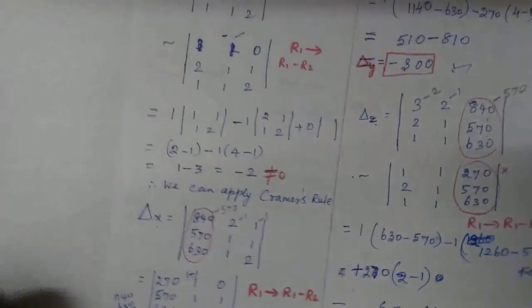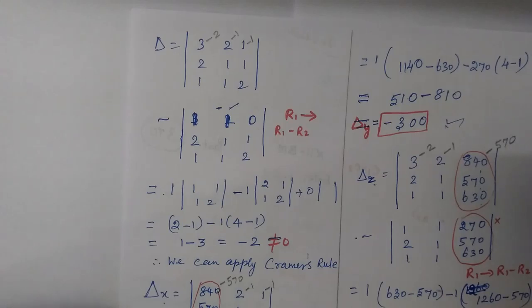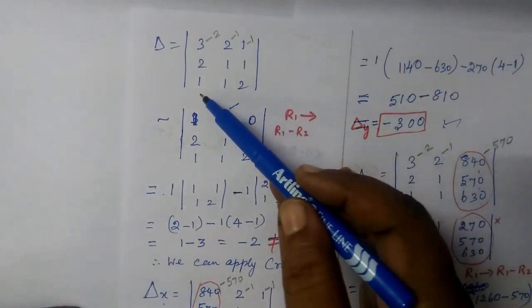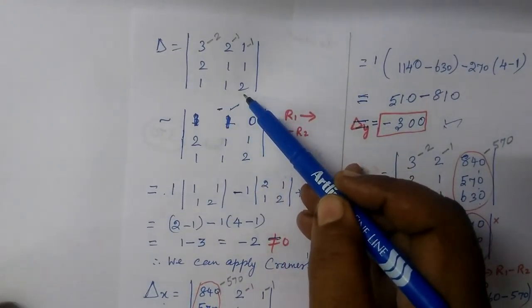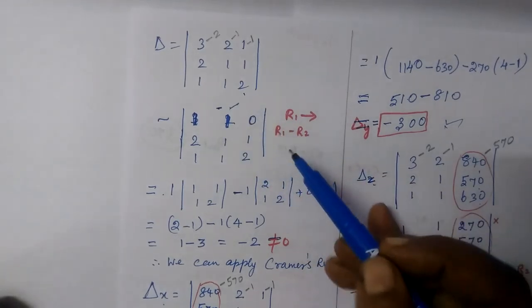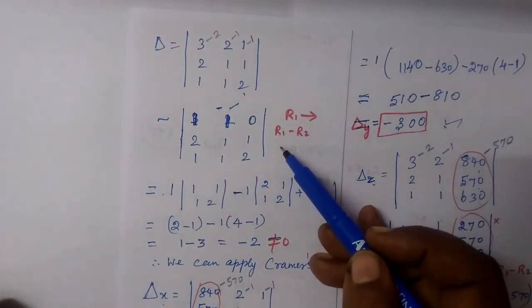In this way, we are going to get delta. Delta is the coefficient matrix: x coefficient, y coefficient, z coefficient. If you use this method, you can use the determinant method directly.